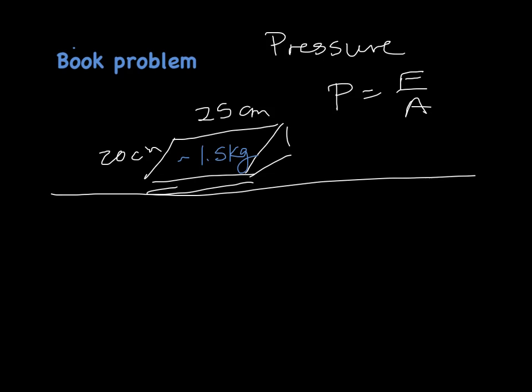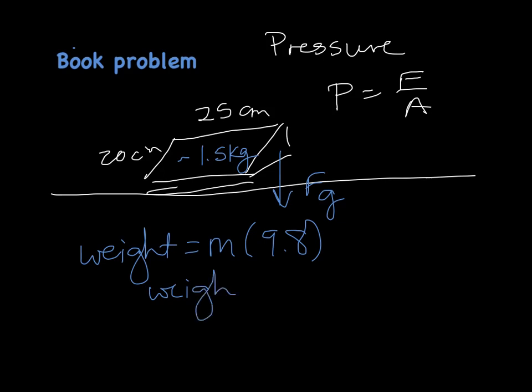So we need the force. Do we have a force in here anywhere? No, we don't. But we do know the mass of the book. Can we find a force from the mass of the book? Yes, we can. Because what force does the book exert on the table? The force of gravity, or its weight. So the weight of the book is equal to its mass times 9.8. So its weight is 1.5 kilograms times 9.8. And that comes out to 14.7 newtons. So now we know the force that's being exerted. That's going to be 14.7.